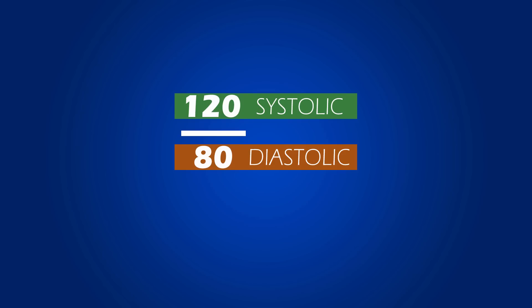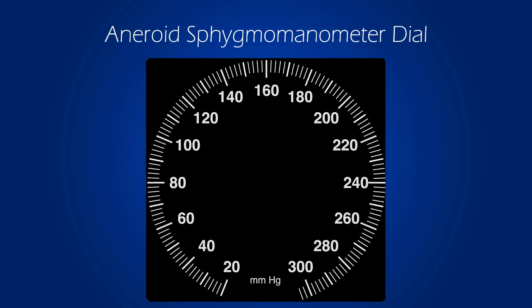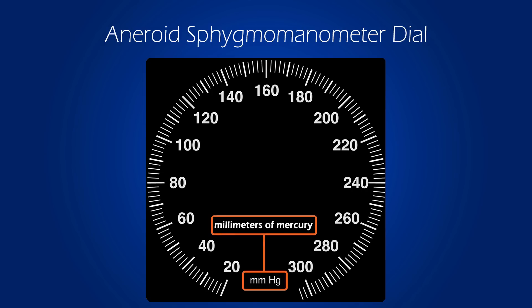Let's take a close look at the dial used for determining such a measurement. This is the aneroid sphygmomanometer dial, also known as the blood pressure dial. The dial has the letters MMHG because blood pressure is measured in millimeters of mercury.